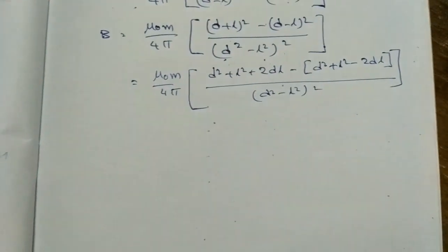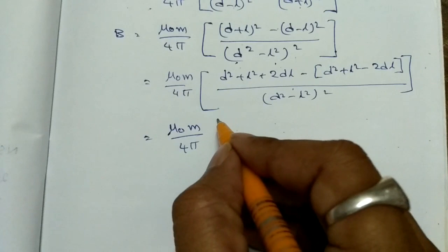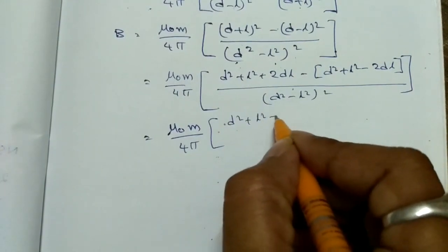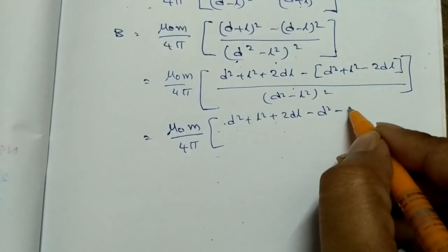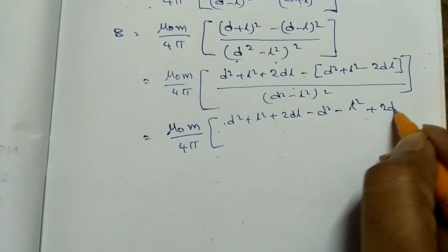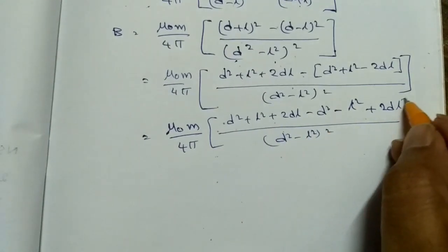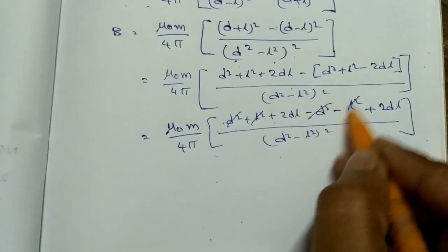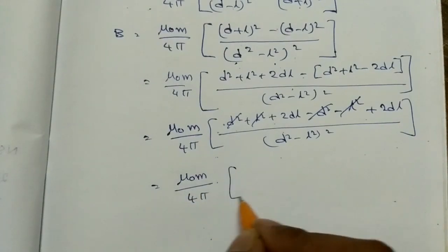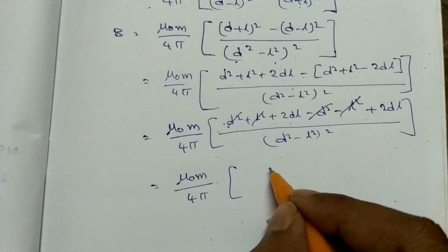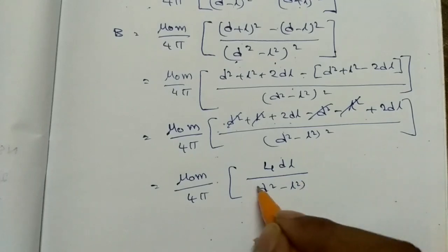Expanding the numerator: (d² + L² + 2dL) − (d² + L² − 2dL) = 4dL. So the result is μ₀/4π × 4dL / (d² − L²)².